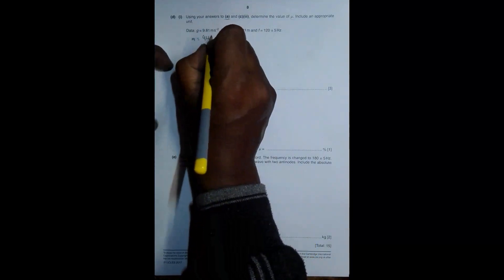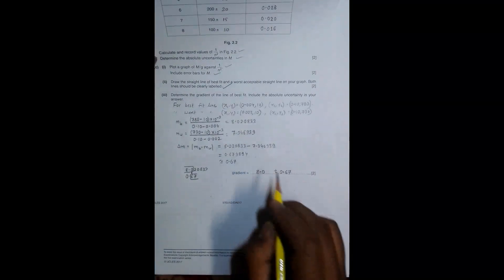This formula says that the gradient is equal to 4 mu F square L square by G, answer to this one, and then it says answer to C3.